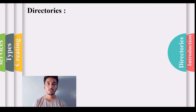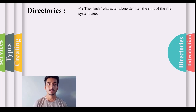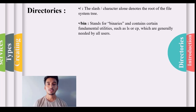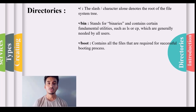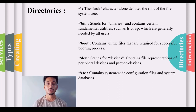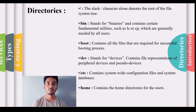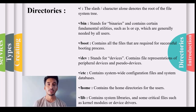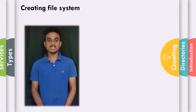The slash character alone denotes the root of the file system tree. /bin stands for binaries and contains fundamental utilities such as ls or cp, generally needed by all users. /boot contains all files required for a successful booting process. /dev contains file representations of peripheral devices. /etc contains system-wide configuration files and system databases. /home contains home directories for users. /lib contains system libraries and critical files such as kernel modules.